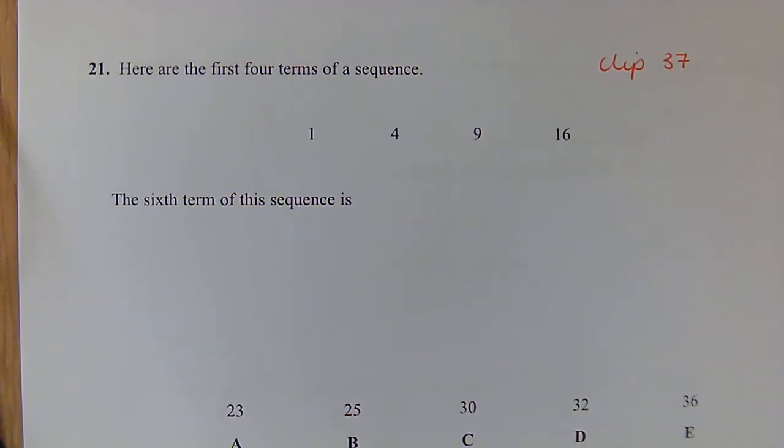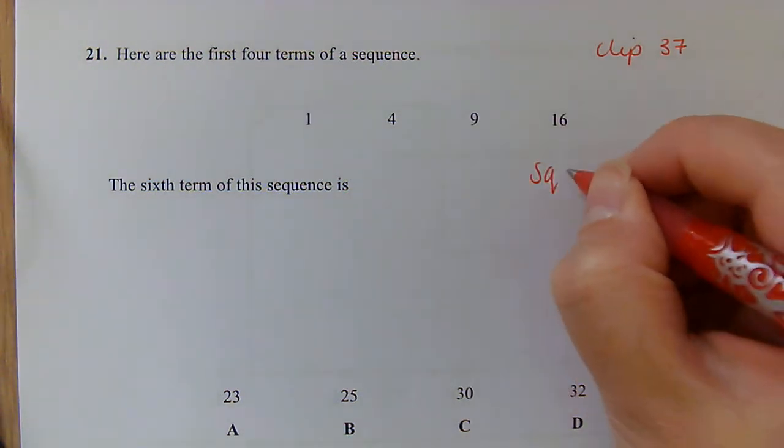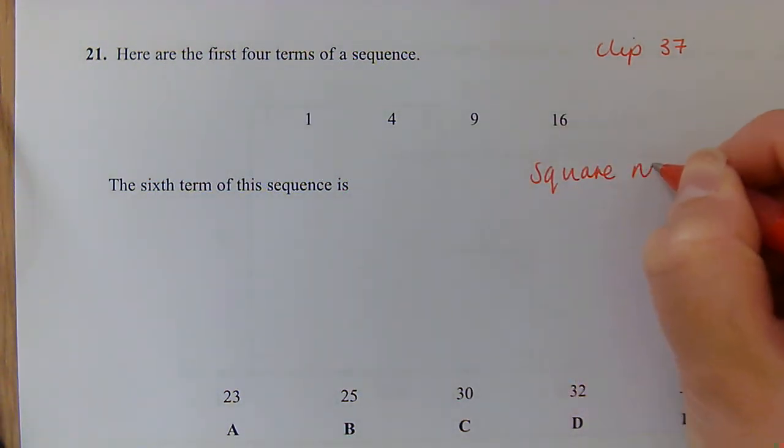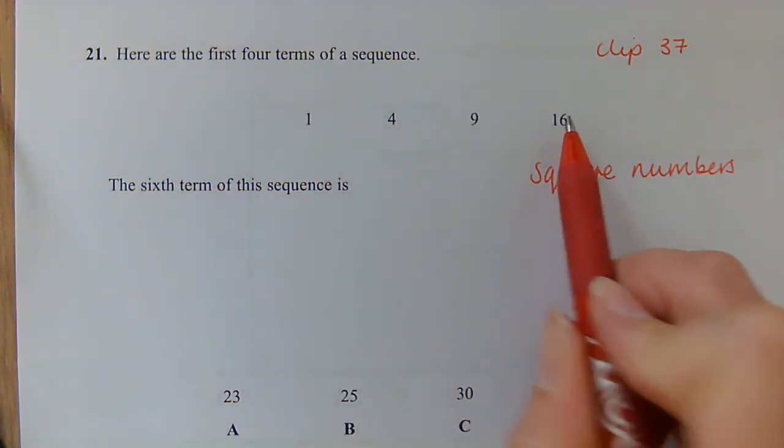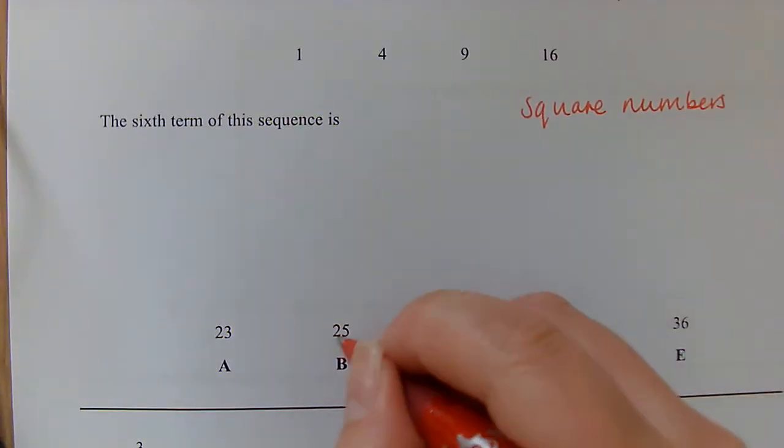Question 21: Another sequence. So we've got 1, 4, 9, 16. We should recognize these as our square numbers. So we've got 1 squared, 2 squared, 3 squared, 4 squared. Next one along is going to be our 5 squared, which is 25.